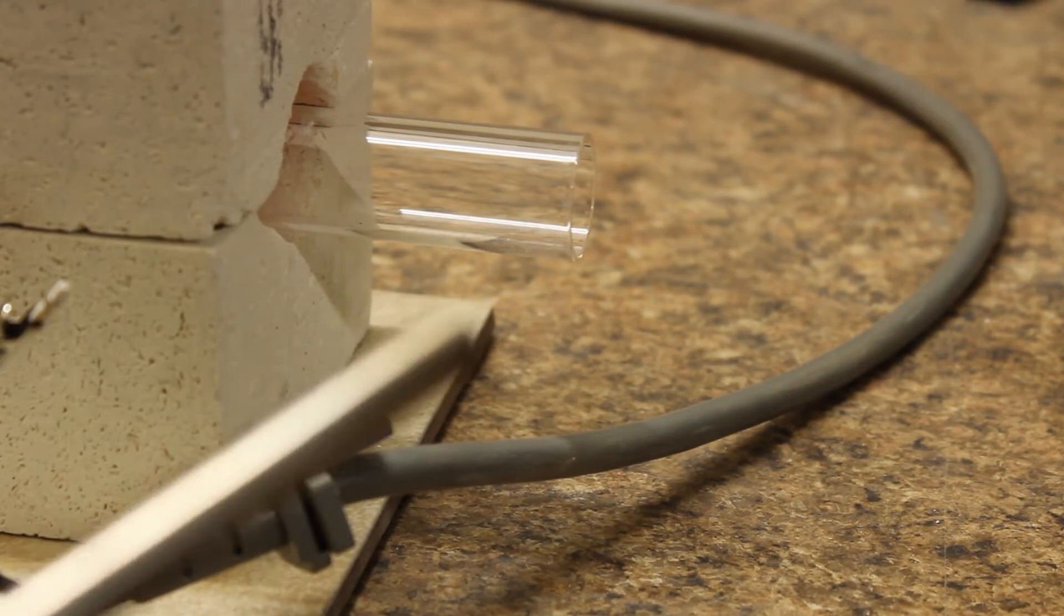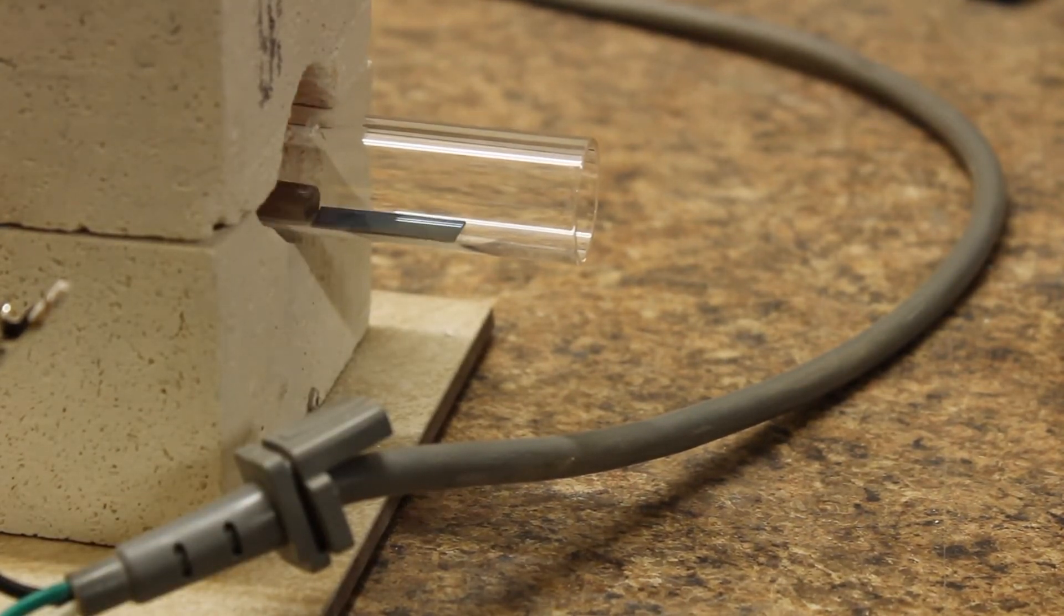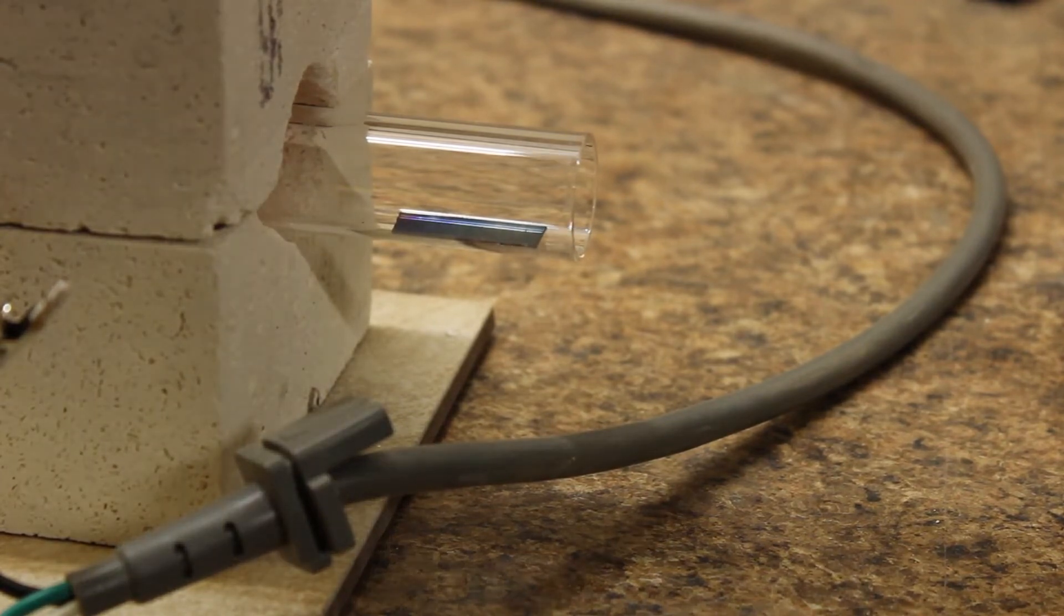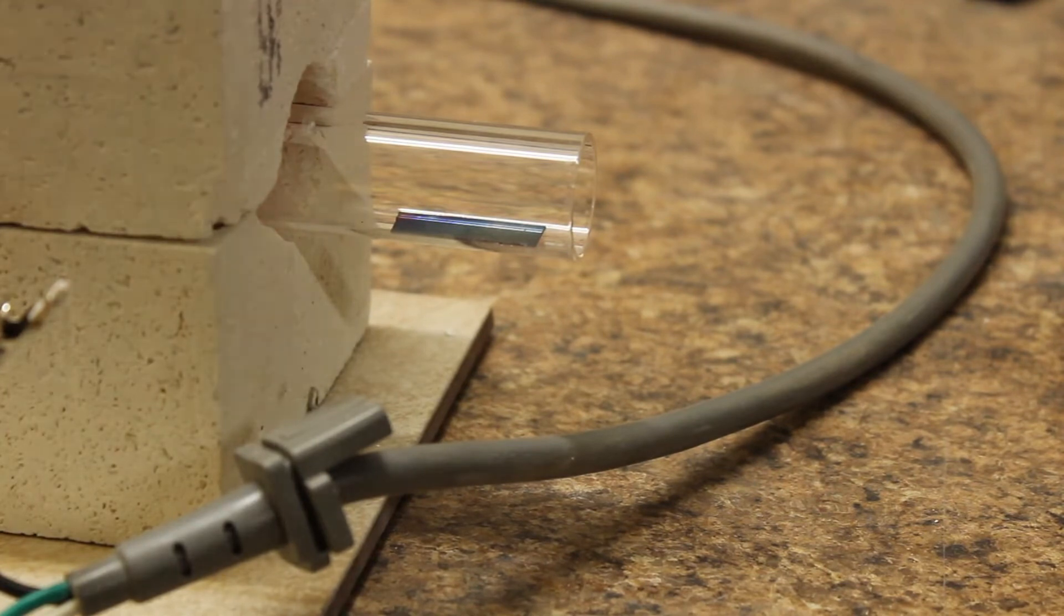Once an hour has passed we remove the connections to our steam generator and while the furnace is still hot we push out our substrate. The first thing we notice is that it's a beautiful blue color telling us that we at least did something. We let the substrate cool on the end of the quartz tube for 10 minutes then pull it out.